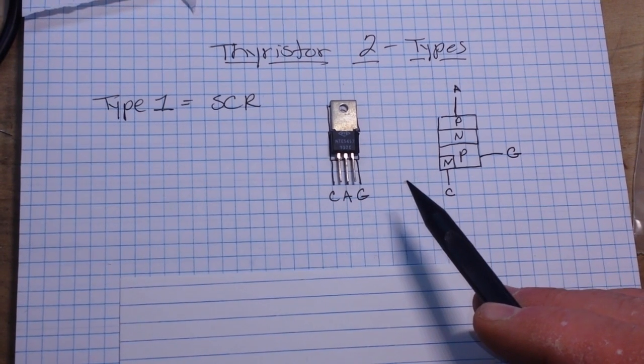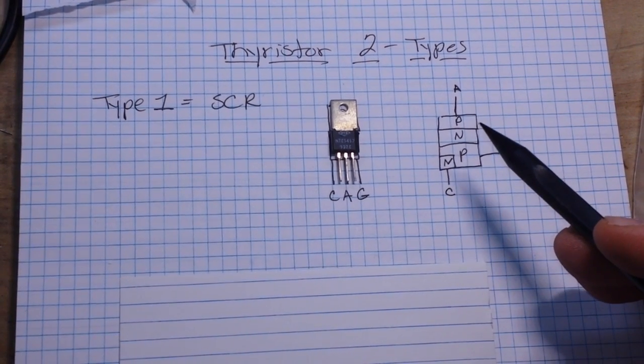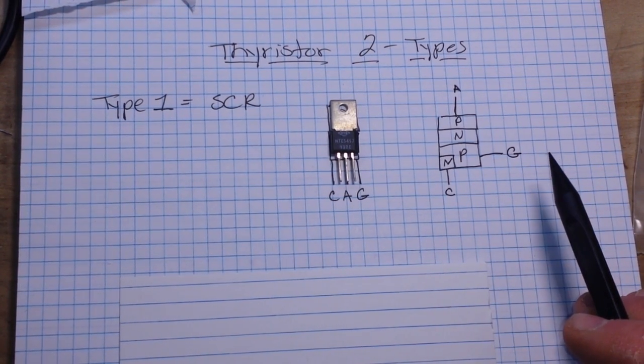At least that's what it says in the textbooks. I've never heard anybody call it a PNPN diode. They simply say give me an SCR and we know what you want. Again, it only passes current in one direction from the anode to the cathode.